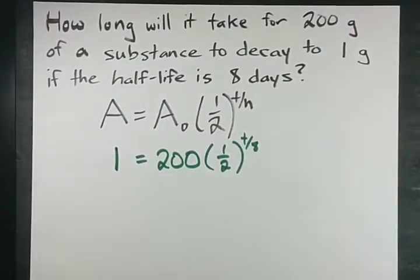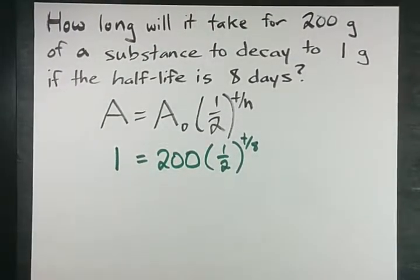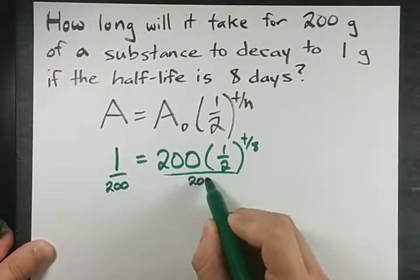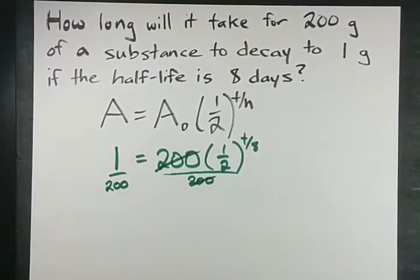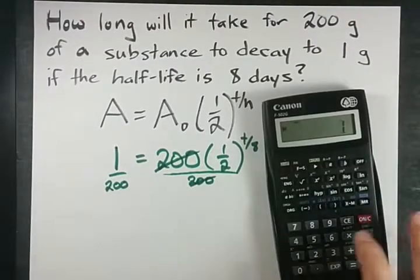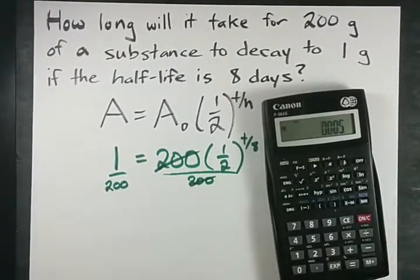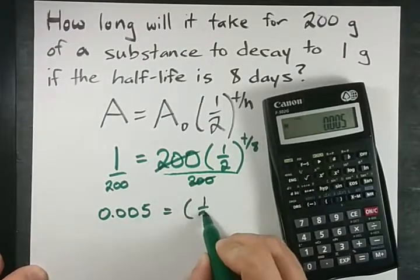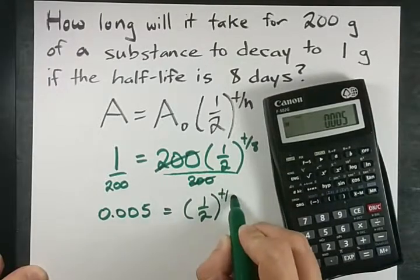This is the equation we have to solve. Now it's easy to do at the beginning. We're going to divide 200 out on both sides of the equation. I'll cancel that 200 out. 1 divided by 200 gives me 0.005 equals one-half to the power of t over 8.